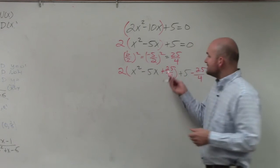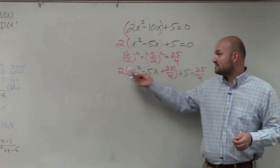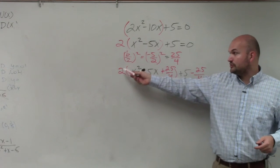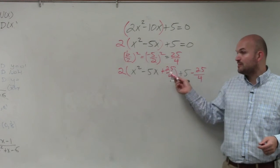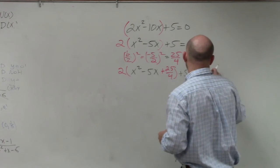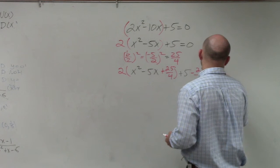And then, since this 25 over 4 is being multiplied by 2, right, by applying the distributed property, if you were to apply the distributed property right now, that 2 is being multiplied by this, right? So therefore, this 25 over 4 needs to be multiplied by 2 as well. Equals 0.